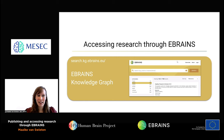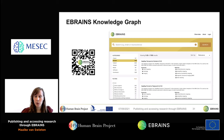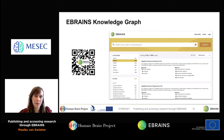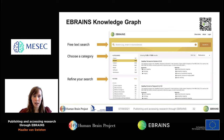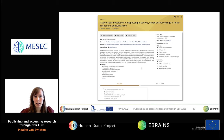Now let me show you how to access research through eBrains. I've already shown the metadata stored in the knowledge graph, and I can also show you the interface that allows you to find research data — that's the eBrains knowledge graph. To find a dataset of interest, you could use a free-text search with keywords, or refine your search by choosing whether you want to look at a dataset, a model, software, or a contributor, or use the filter option to narrow down by species, technique, or modality.